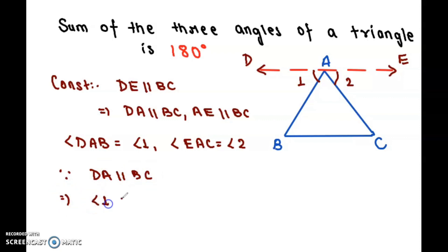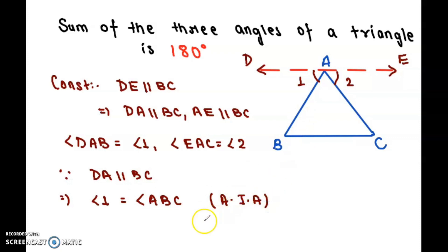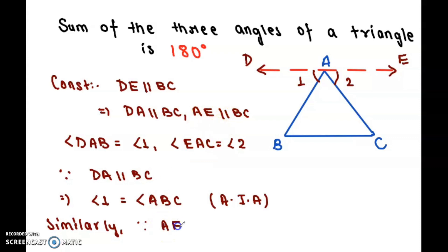Since DA is parallel to BC, we know that alternate interior angles are equal. So angle DAB, which is angle 1, is equal to angle ABC. Similarly, since AE is parallel to BC, angle 2 is equal to angle ACB. Both follow from the alternate interior angles property of parallel lines.